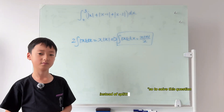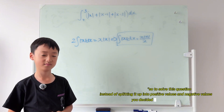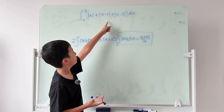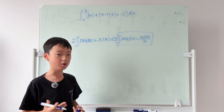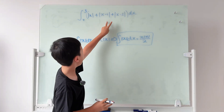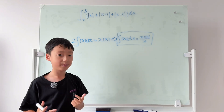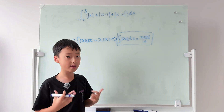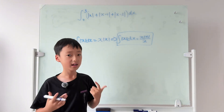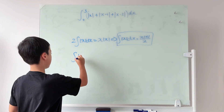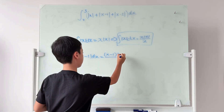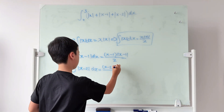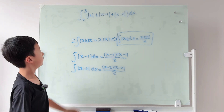So instead of splitting into positive and negative values, we used a recurrence approach. For the other terms with |x−1| and |x−2|, we apply u-substitution: letting u equal x−1 or x−2 gives du = dx, so the formula is the same but with x−1 or x−2 substituted in for all x's.